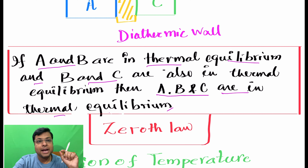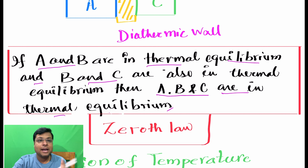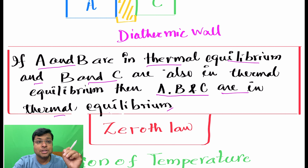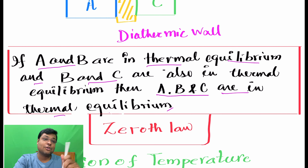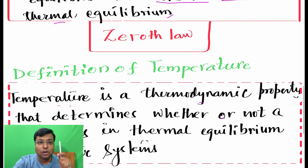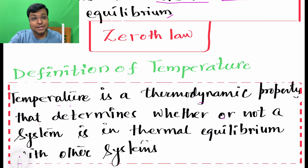This is how the Zeroth Law of Thermodynamics is defined: if A and B are in thermal equilibrium, and B and C are also in thermal equilibrium, then A, B, and C are all in thermal equilibrium. It is as simple as saying if A = B and B = C, then A = C. From this concept, the definition of temperature emerged.